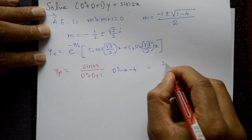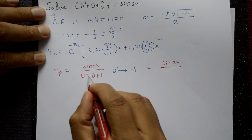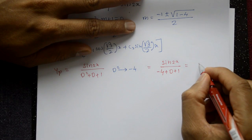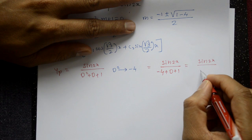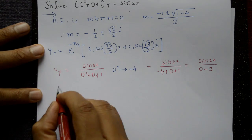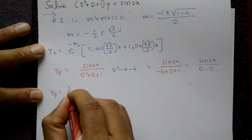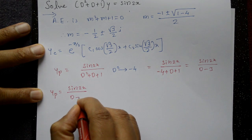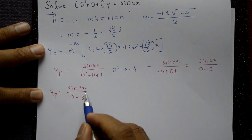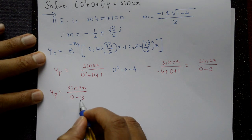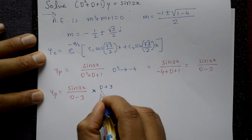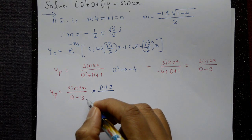This simplifies to sin2x / (D − 3). It is not possible to apply D² = −a² directly since D − 3 is still there. So we multiply and divide by (D + 3) in numerator and denominator.